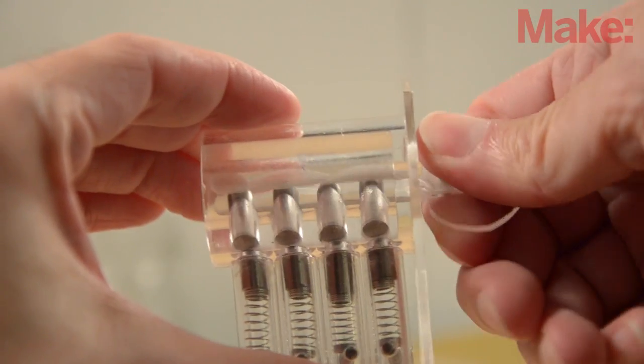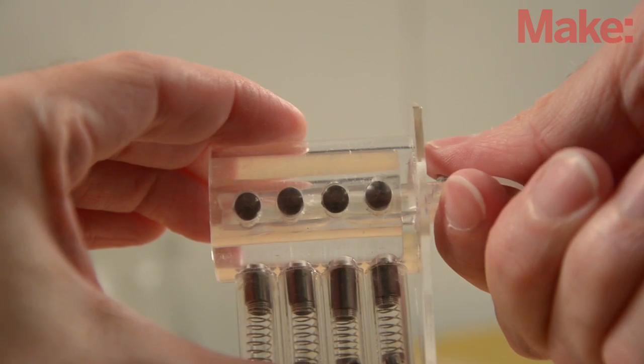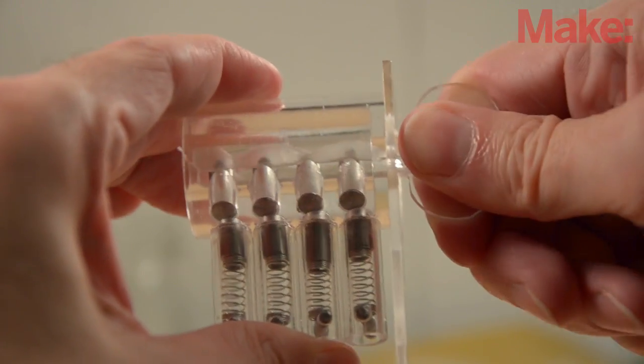Using the correct key aligns the pins, the bottom half in the pin chamber, the top half in the plug, and the lock rotates.